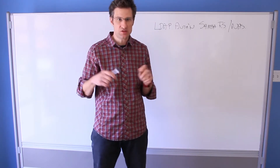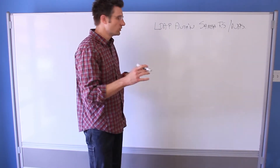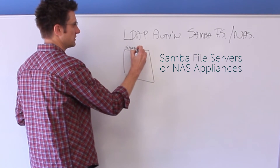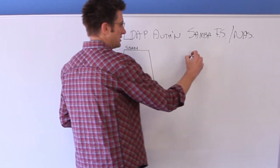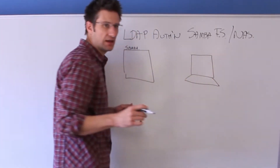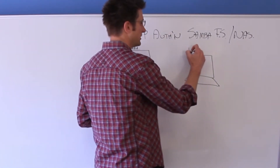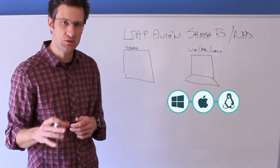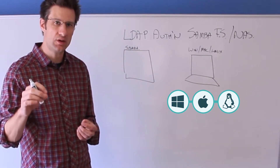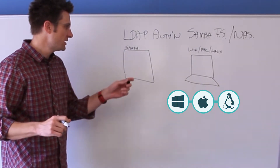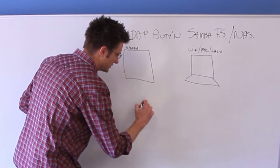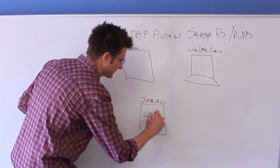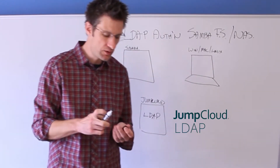Let's move into the boxes and lines so you can get an understanding of our integration. Three boxes: this first box represents the Samba server, the file share server or the NAS. The second box represents the employee or end user's computing device, which can naturally be Windows, Mac, or Linux — we'll focus specifically on the Windows use case to show why Samba and the SMB/CIFS protocol matter. The third box is JumpCloud, and very specifically our LDAP endpoint.